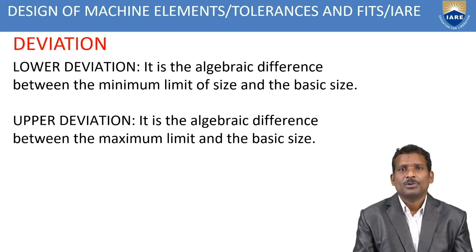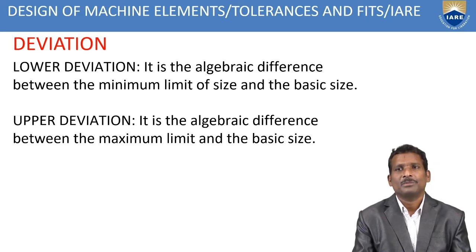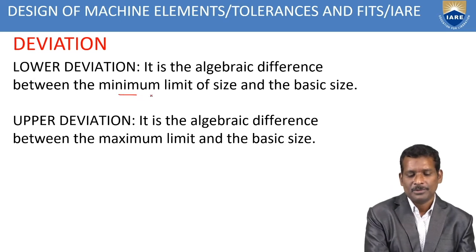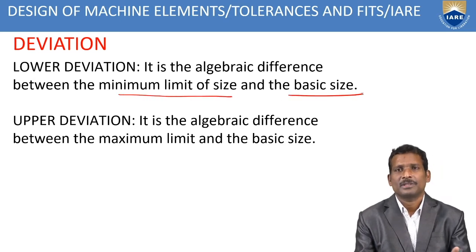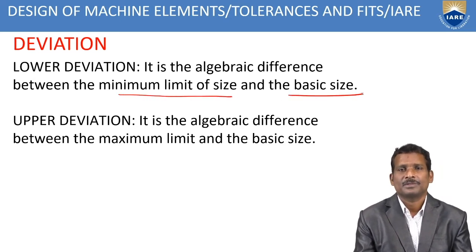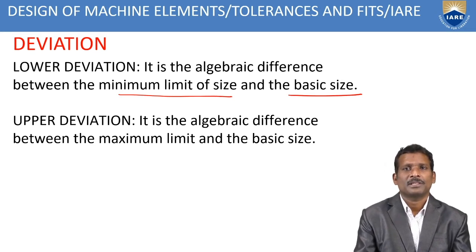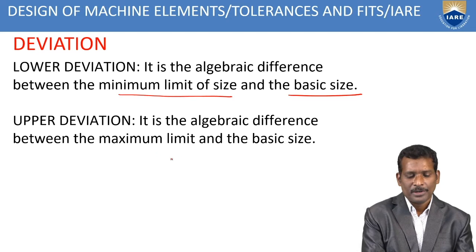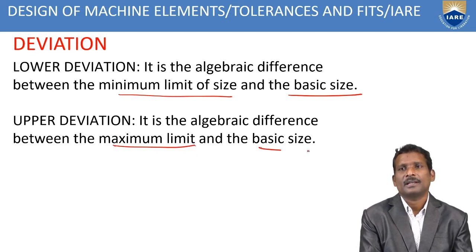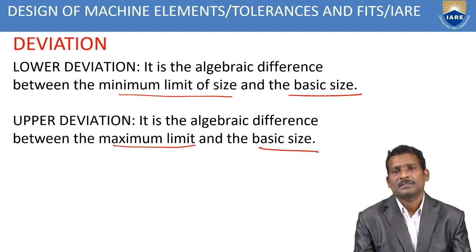The next one is deviation — lower deviation and upper deviation. The lower deviation is the algebraic difference between the minimum limit of size and the basic size. The upper deviation is the difference between the maximum limit and the basic size.